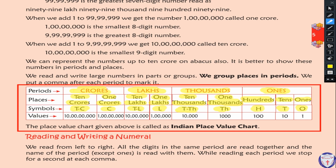In the ones place we have 1; in the tens place we have 10, which contains one zero; in the hundreds place we have 100, which is one with double zero; in the thousands place we have 1,000, which includes three zeros; and ten thousand includes four zeros. This place value chart is called the Indian place value chart.